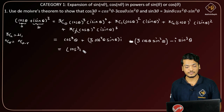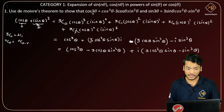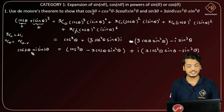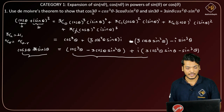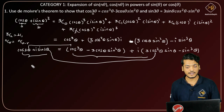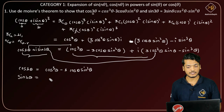Now grouping real and imaginary parts, the right-hand side becomes (cos³θ - 3cosθ·sin²θ) + i·(3cos²θ·sinθ - sin³θ). By De Moivre's theorem, the left-hand side (cosθ + i·sinθ)^3 = cos(3θ) + i·sin(3θ). Since two complex numbers are equal, their real and imaginary parts must be equal. Equating them, we get cos(3θ) = cos³θ - 3cosθ·sin²θ and sin(3θ) = 3cos²θ·sinθ - sin³θ, which is what we needed to show.